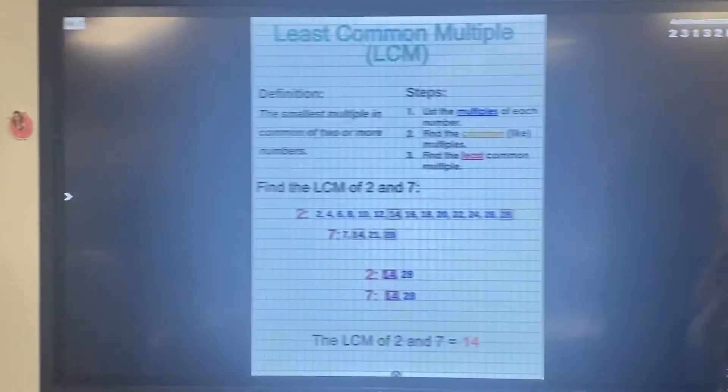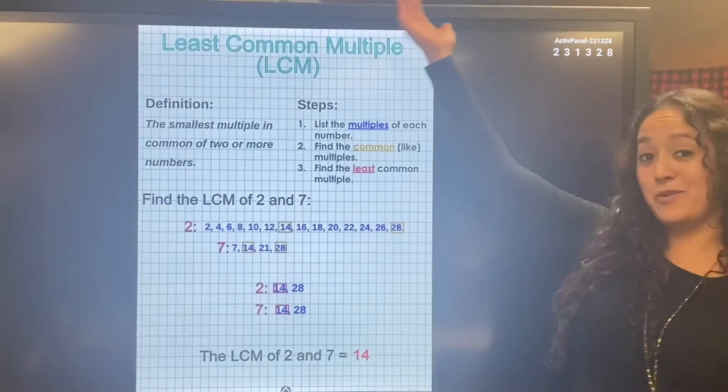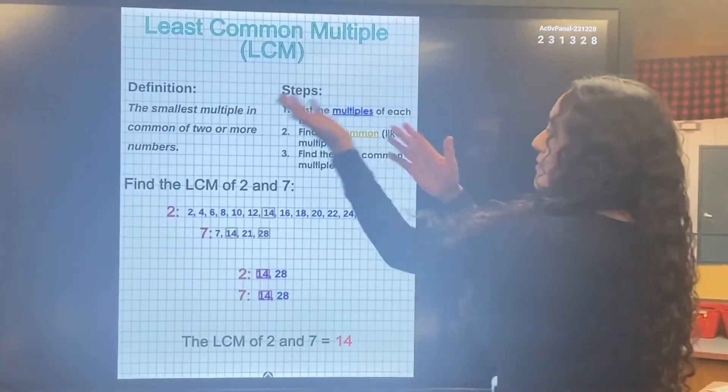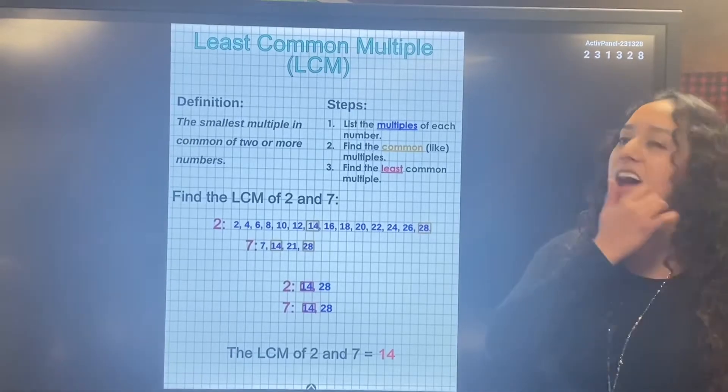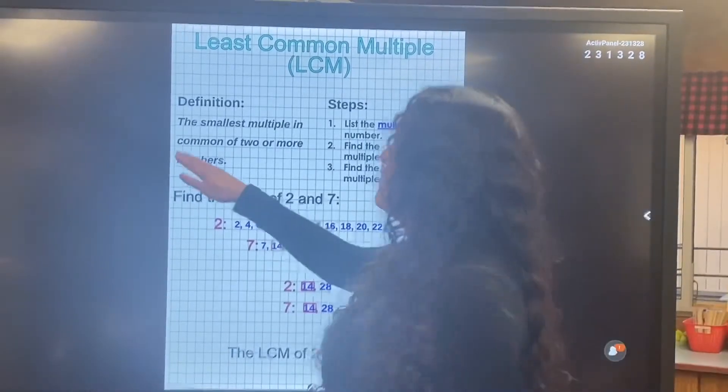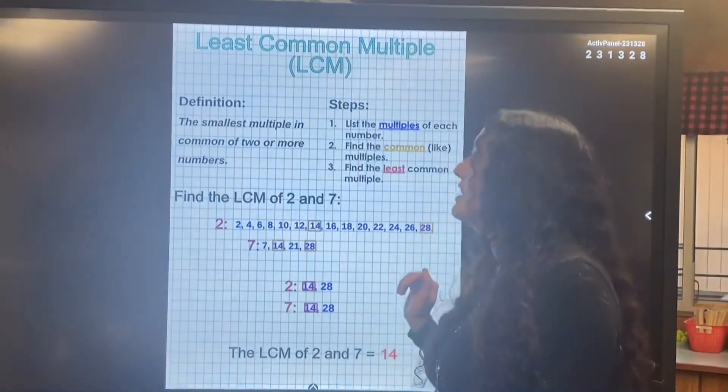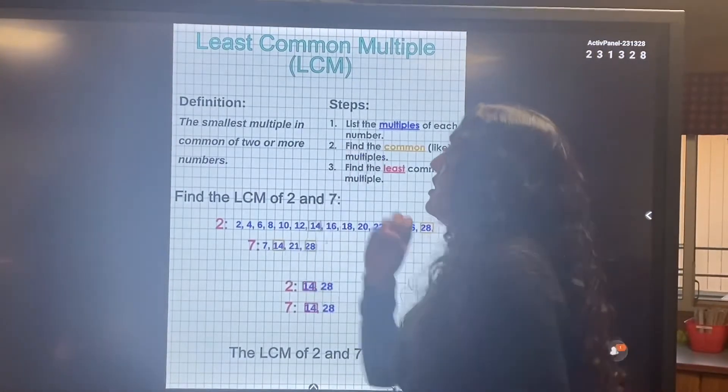So today we are working on least common multiple, LCM for short. All right. Here's the definition. The least common multiple is the smallest multiple in common of two or more numbers.